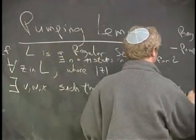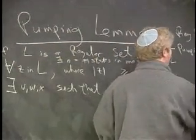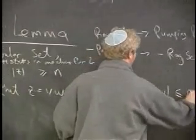So we write that like this, such that the |vw| part is less than or equal to n.